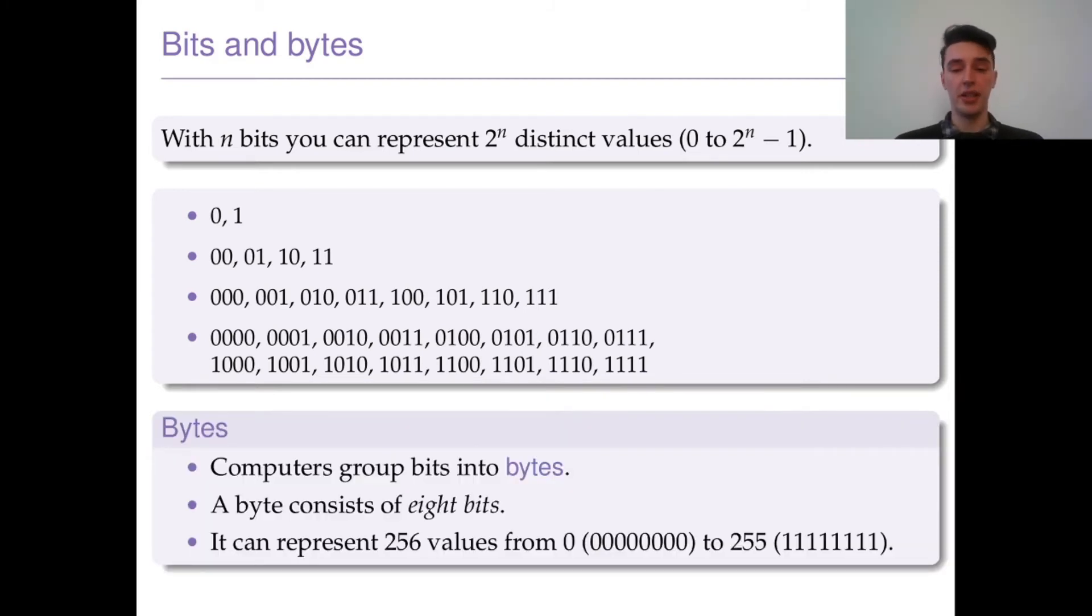Another extension: this is a byte. Computers group bits into bytes and then evaluate them byte by byte. A byte consists of eight bits. So eight bits can be stored into a byte and it represents 256 values from 0 up to 255. These are two very basic ideas to get into your head: what are bits and what are bytes.